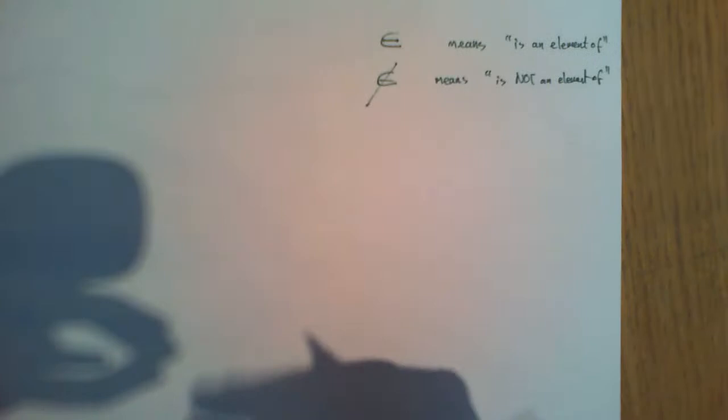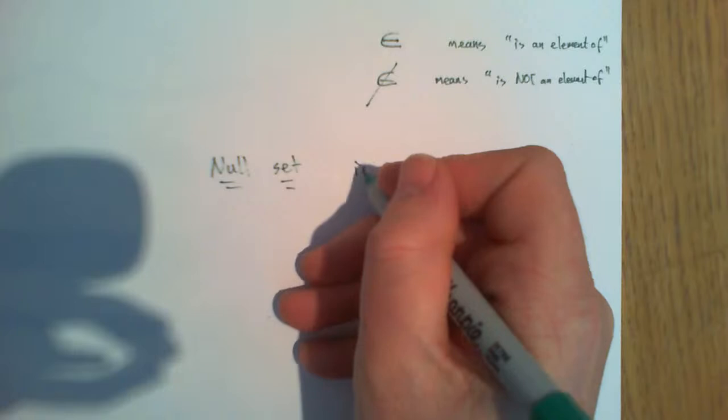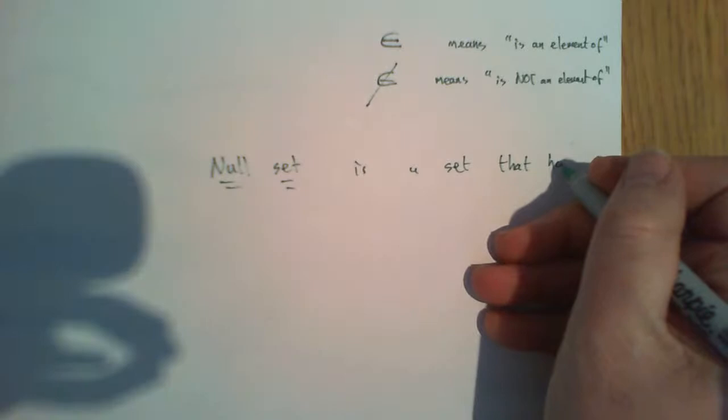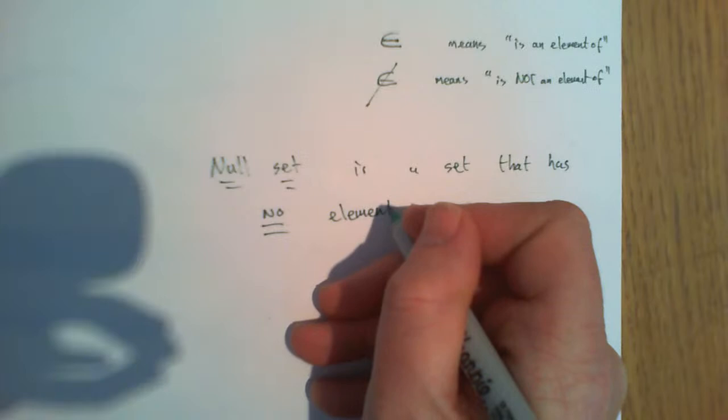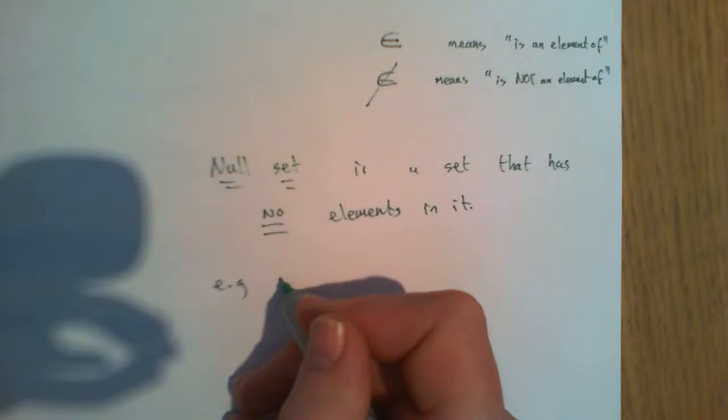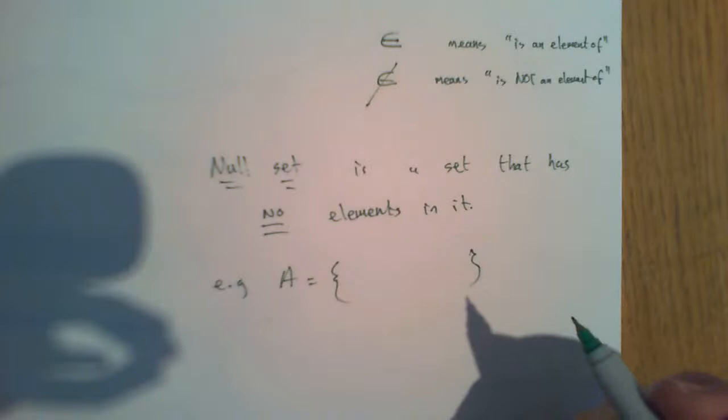The null set is a set that has no elements in it. For example, if A is the set of people who are 700 years old...